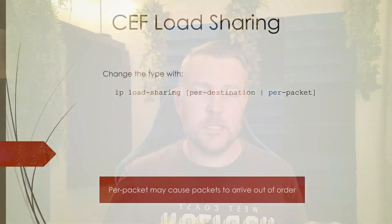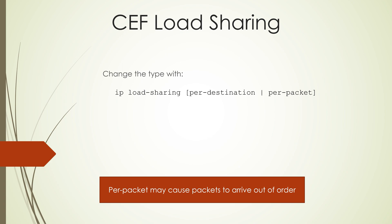So that one sounds pretty good, but unfortunately there's a downside to it. When packets take different paths, they may arrive at the destination out of order. This is particularly bad for real-time traffic types like voice and video. For this reason, Ceph load balancing is set to per-destination by default. And in general, you wouldn't want to change this unless you have a particularly good reason to do so. Thanks for watching and I hope this has been useful for you.